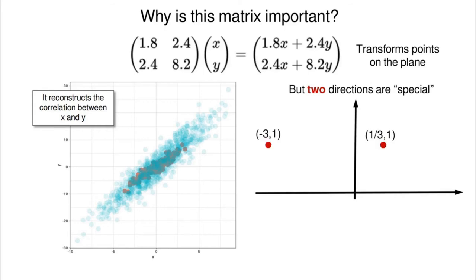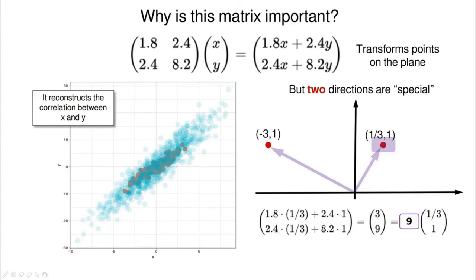There are two directions which are special in this transformation. Take the points (−3, 1) and (1/3, 1) and apply the transformation. Computing 1.8 times 1/3 plus 2.4 times 1, and 2.4 times 1/3 plus 8.8 times 1, we get a result that is 9 times the original vector. Applying this transformation simply stretches the vector without rotating it. This is called an eigenvector — we are only scaling it, not changing its direction.